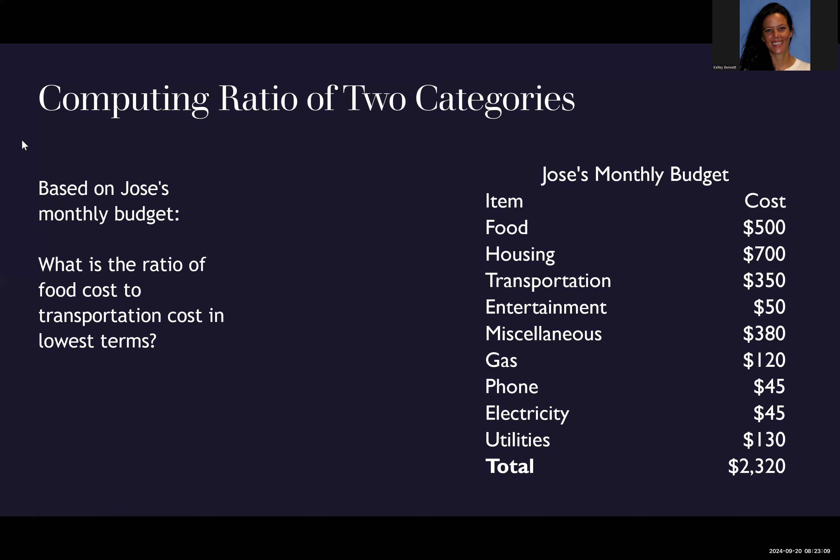In this example, we're going to compute the ratio of two categories. So here we have Jose's monthly budget, and it's asking us what is the ratio of food cost to transportation cost in lowest terms. The ratio of food cost to transportation cost is going to be the fraction where food cost goes on top and the transportation cost goes on the bottom.